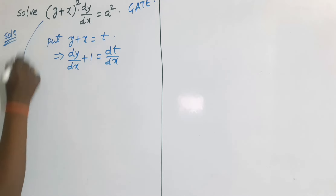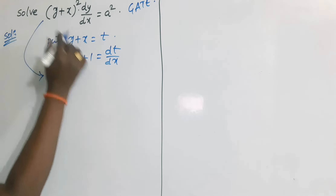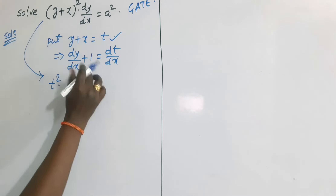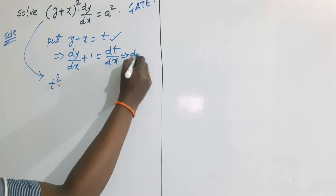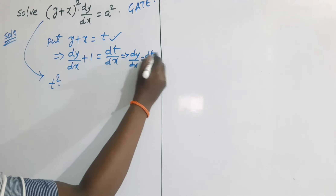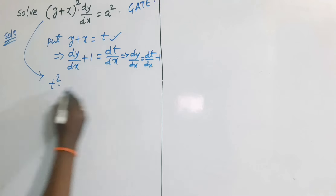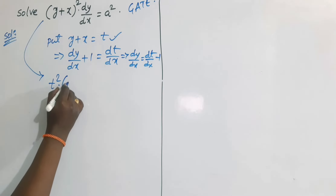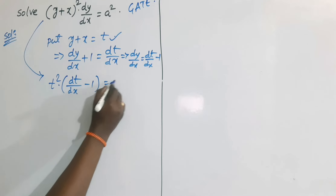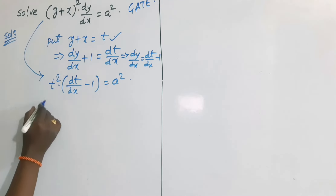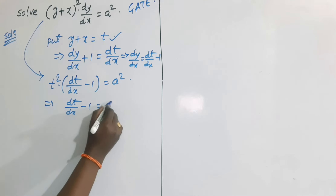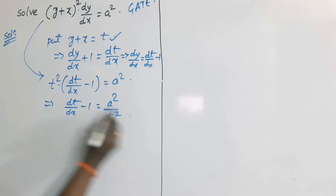The equation becomes: y + x is t, so t² · dy/dx. Now dy/dx is dt/dx − 1 (by transforming to the right-hand side). So the equation becomes t² · (dt/dx − 1) = a², which gives dt/dx − 1 = a²/t².